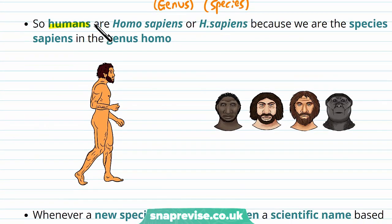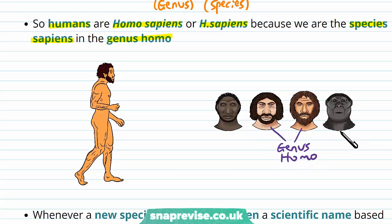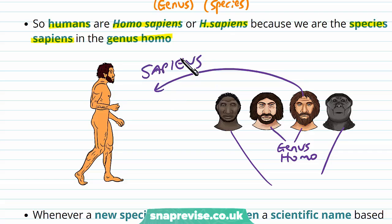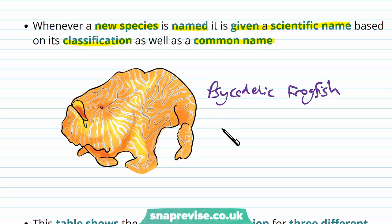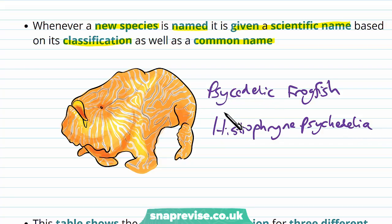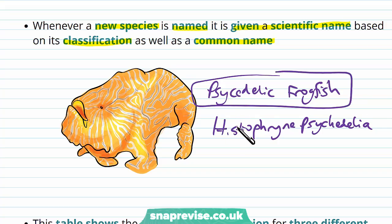Humans are Homo sapiens — we are the species sapiens in the genus Homo. Looking at groups of similarly related genuses, Homo erectus and Homo sapiens both come under the genus Homo, but they are two different species. Whenever we identify a new species, we name it with a scientific name based on its classification, as well as a common name. For example, the psychedelic frogfish is also known by its binomial name Histiophryne psychedelica — a scientific name and a common name.